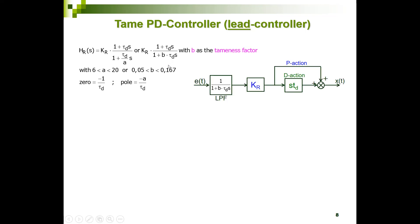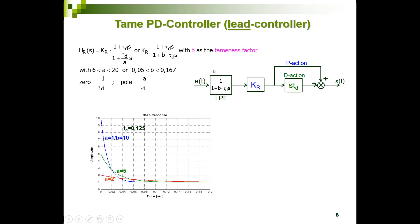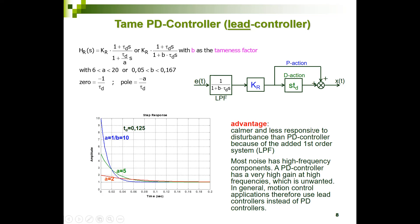The tame PD controller has one pole and one zero. The standard PD controller is preceded by a low-pass filter: 1 over (1 + B·tau_D·S). The smaller the A factor (higher B), the smoother the output response compared to a standard PD controller. The advantage is a calmer, less noise-reactive output. Because many motion control systems have high-frequency noise, lead controllers (tame PD controllers) are often preferred over standard PD controllers.